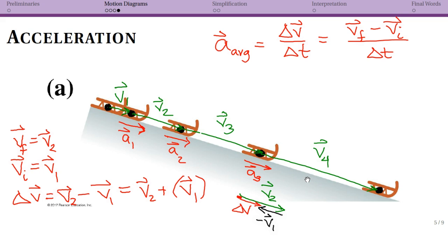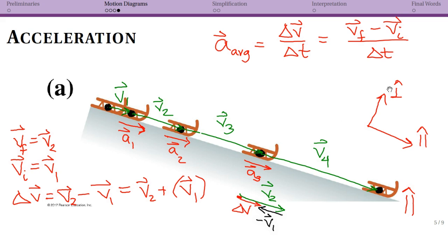The directionality is really important — it's not just to the right or down, but along the angle of the slope. If we want to specify directions, we can use the parallel direction symbol for along the slope, where the hat represents a unit vector. For the direction perpendicular to the surface we use the perpendicular symbol. So we do have notation for directions that are parallel or perpendicular to a surface.